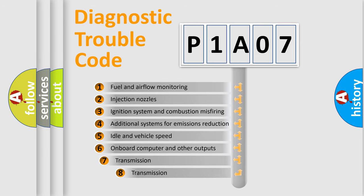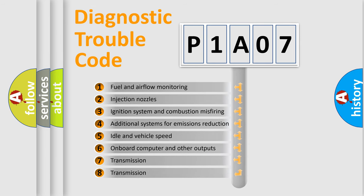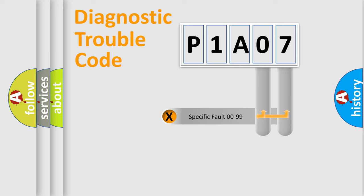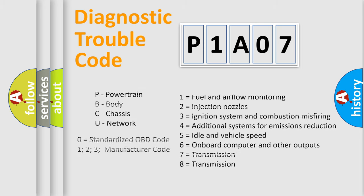The third character specifies a subset of errors. The distribution shown is valid only for the standardized DTC code. Only the last two characters define the specific fault of the group. Let's not forget that such a division is valid only if the second character code is expressed by the number zero.